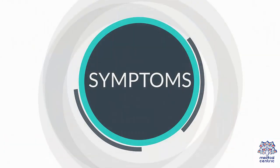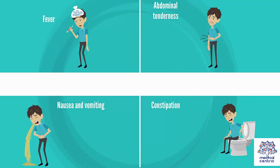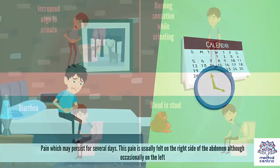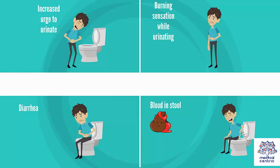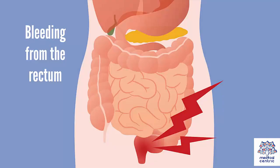Symptoms of diverticulitis include fever, abdominal tenderness, nausea and vomiting, constipation, and pain which may persist for several days. This pain is usually felt on the right side of the abdomen, although occasionally on the left. Other symptoms include increased urge to urinate, burning sensation while urinating, diarrhea, blood in stool, and bleeding from the rectum.